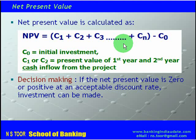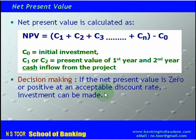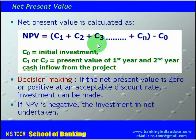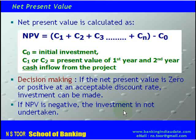To decide whether to make the investment or not: if the net present value is zero or positive, the project can be accepted and investment can be made, provided the discount rate at which the NPV is calculated is acceptable to the investor. If at that discount rate the net present value is negative, the investment will not be undertaken. So investment is made only if NPV is zero or positive and the discount rate is acceptable to the investor.